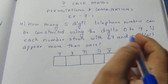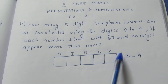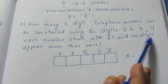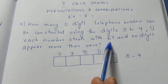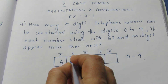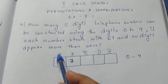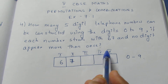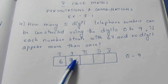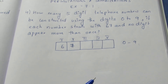The condition here: they are building a number from 0 to 9. We need to construct our numbers from 0 to 9 if each number starts with 67. The first number will be 6 and the second number will be 7, and no digit appears more than once. So there is no repetition — only once can a number appear; it cannot come more than once.